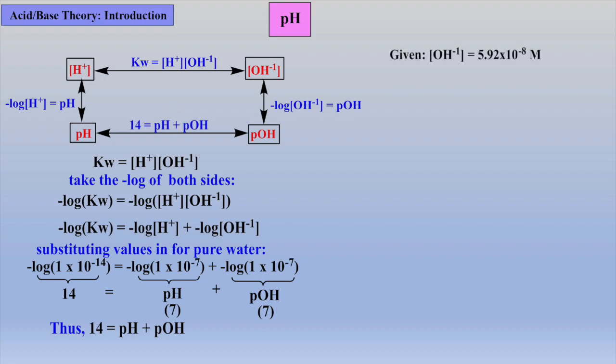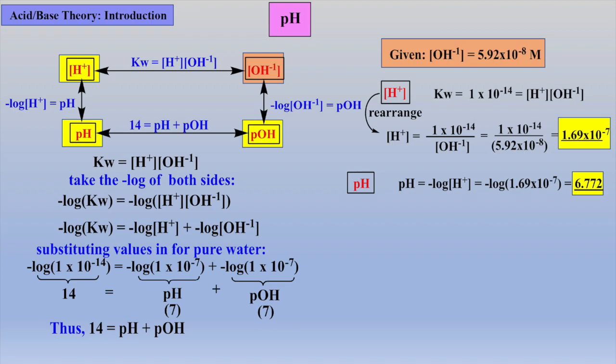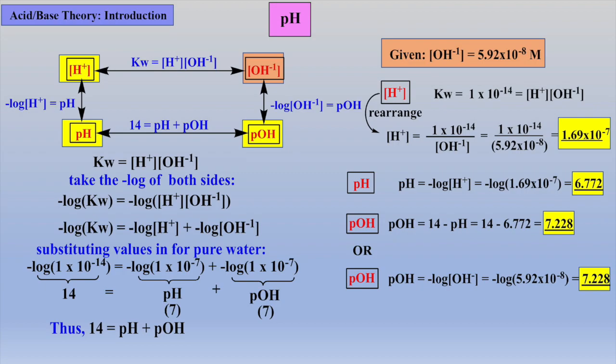The student should make sure that they can easily zip around the rectangle. For example, given the hydroxide ion concentration is equal to 5.92 times 10 to the minus 8 molar, one should be able to calculate the other three values on the corners of the rectangle. Using the Kw expression, the proton concentration is deduced, followed by the pH after taking the negative log of the proton concentration. The pH is then subtracted from 14 to yield the pOH. Please take a moment to look over all the sig figs within each answer.